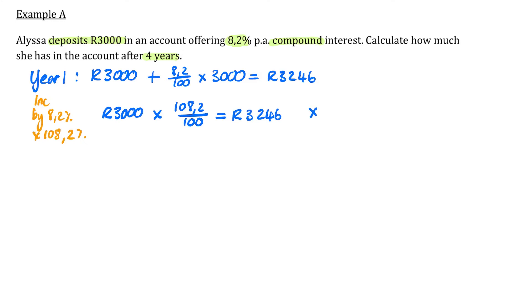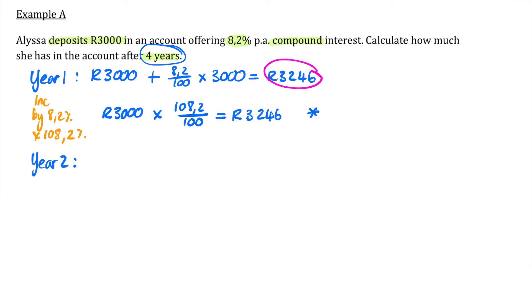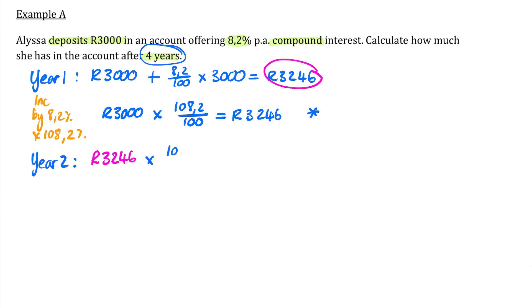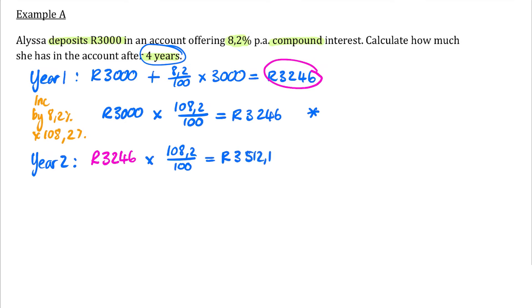We encourage you to use this shorter multiplication method because we need to apply it four times for compound interest. In year two, Alyssa earns interest on all her money — she's starting with R3,246 — and we multiply by 108.2 over 100 to get R3,512.17. The extra R246 from year one now also earns interest.